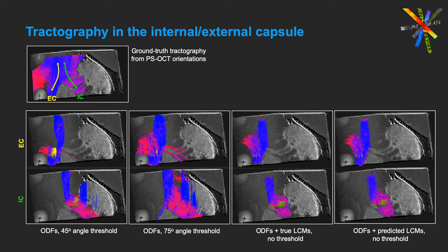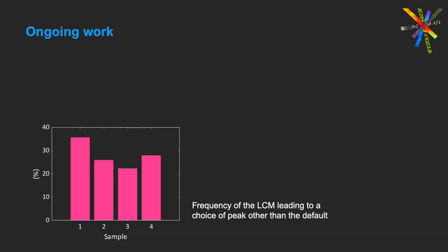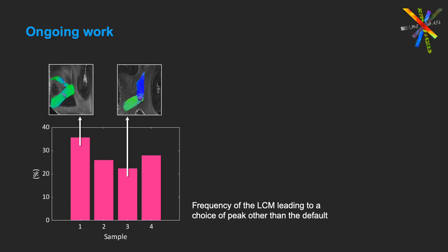Of course, here we are training and predicting based on different sets of slices from the same sample. In order for this to generalize across the brain, we will need a much richer training set with data from many different regions, and we are in the process of collecting more of those data sets. Based on preliminary results from four samples so far, using the ground truth LCM from the optical data leads to choosing a different peak than the one that we would choose based on the conventional criterion of minimizing the bending angle anywhere from 22 to 36 percent of the time. This is less pronounced in samples that contain only crossing fibers, which are well modeled by ODFs, and more pronounced in samples that contain other configurations, such as branching fibers. But overall, we find that the ground truth fiber configurations in the white matter disagree quite frequently with what is assumed by conventional tractography rules.